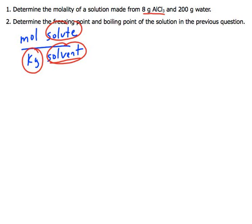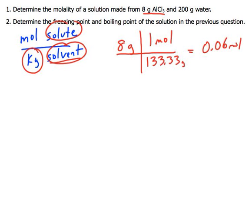So our solute is AlCl3, it's our solute because it's the one with less substance typically, and water is usually your solvent. So we're going to convert that into moles, so one mole, I'm going to add up the mass of AlCl3, so I get 133.33 grams, so that is going to be 0.06 moles of AlCl3.